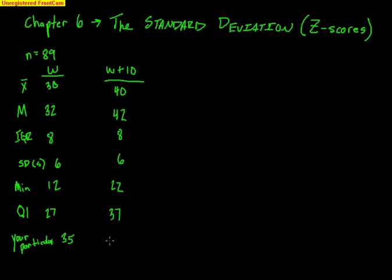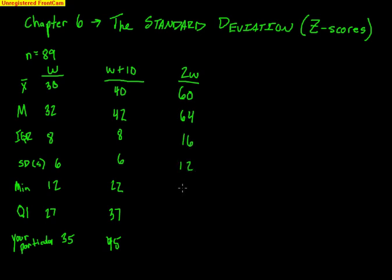Now let's say I wanted to estimate everybody's 400-yard dash time, meaning I'd multiply everybody's score by 2. The mean would become 60 seconds. The median would be 64 seconds. The IQR and standard deviation are measures of spread and do get affected by multiplication, becoming 16 and 12 respectively. The minimum would be 24. The first quartile — 27 times 2 — would be 54. And your particular score would be 70.